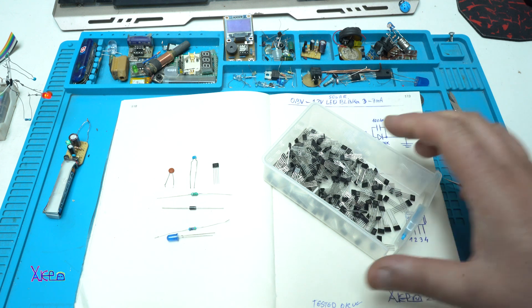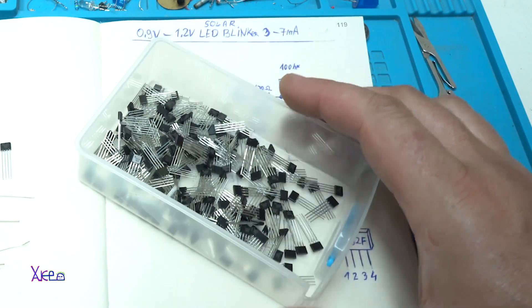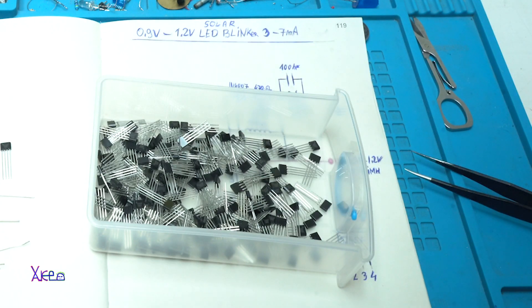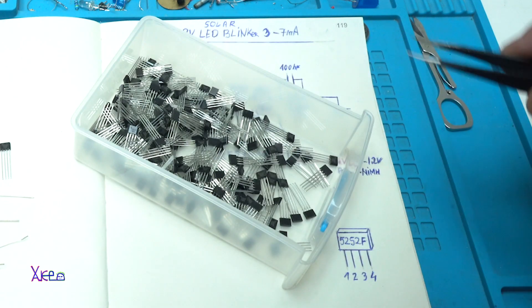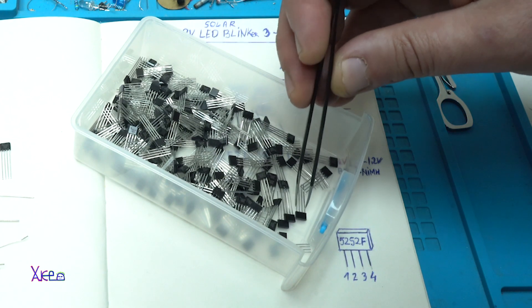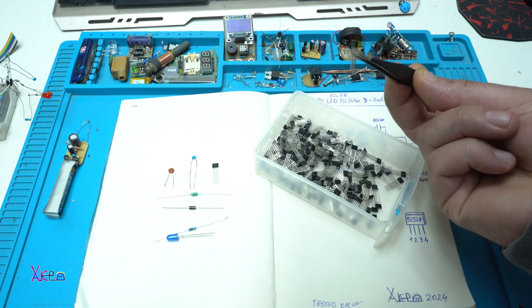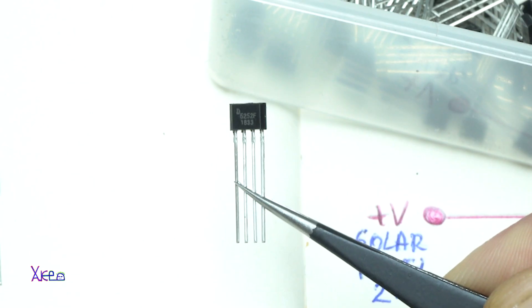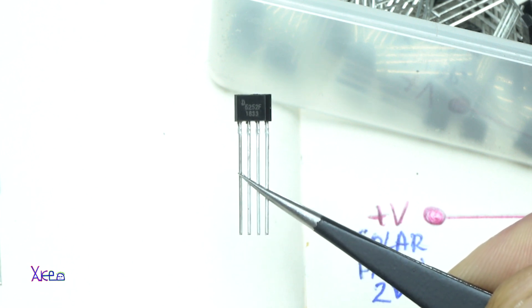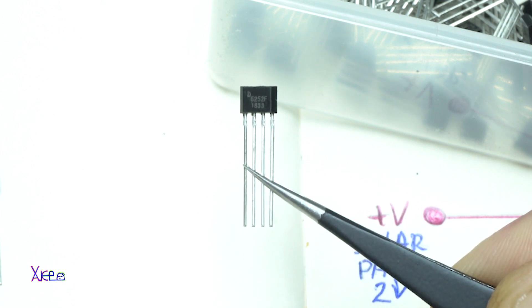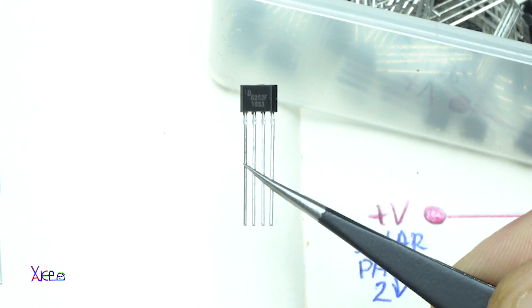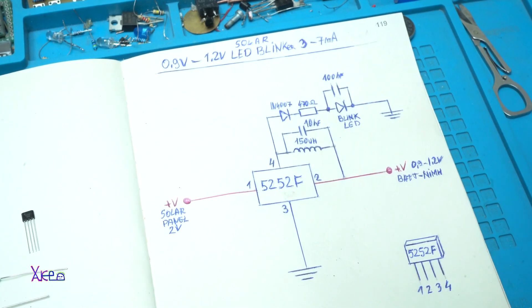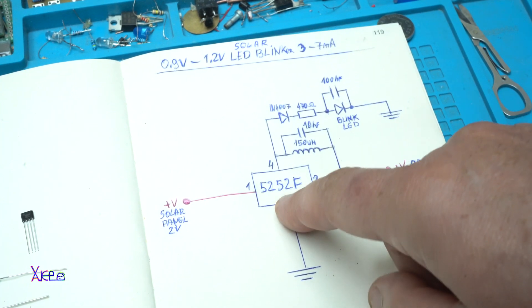From eBay a couple of years ago, I ordered 100 solar LED drivers, model 5252F solar garden LED driver for step-up voltage. Basically, in almost every solar garden light there is this integrated chip.